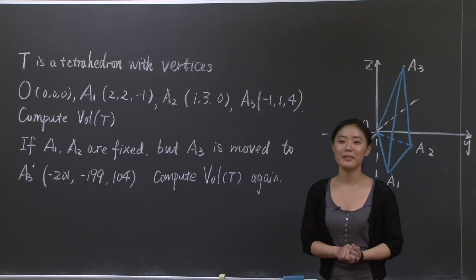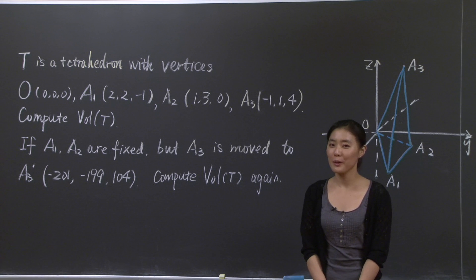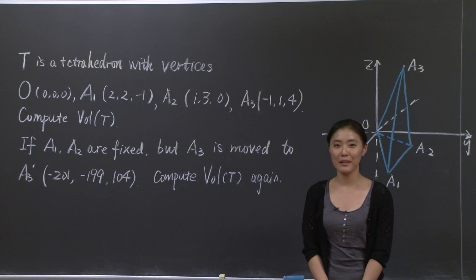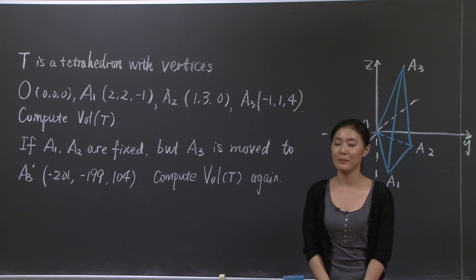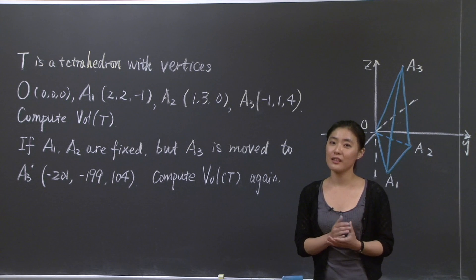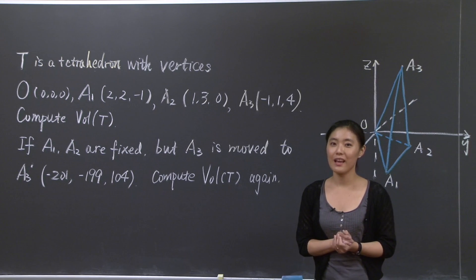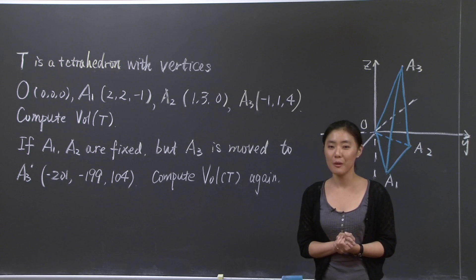Hello. Welcome back to recitation. I'm sure you're becoming more and more familiar with the determinant of matrices. In the lecture, we also learned the geometric interpretation of the determinant: the absolute value of the determinant of a matrix is simply equal to the volume of the parallelepiped spanned by the row vectors of that matrix.